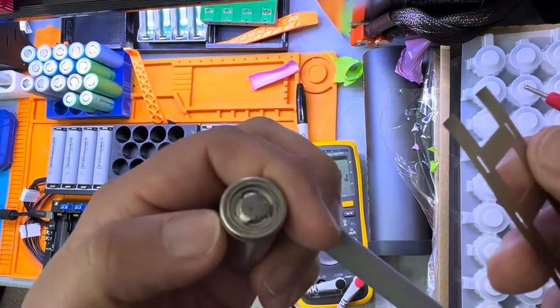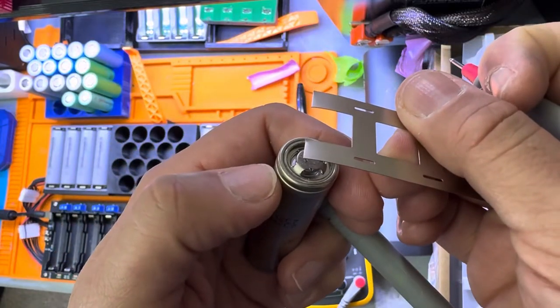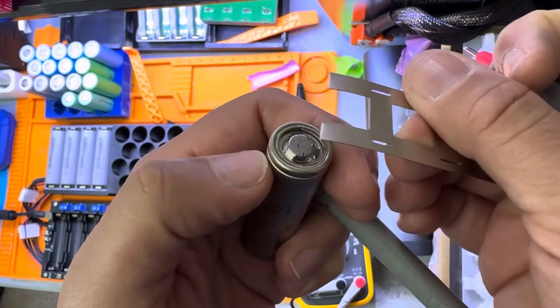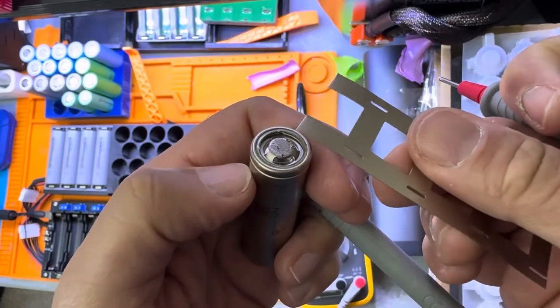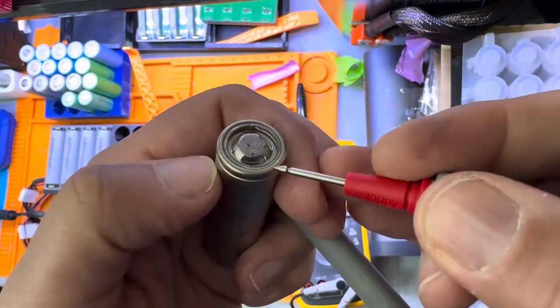Imagine that we don't have that insulator. If I put this right here, it's going to cross the cell, it's going to short the cell immediately. Why? Because we have right there negative, and this is positive.